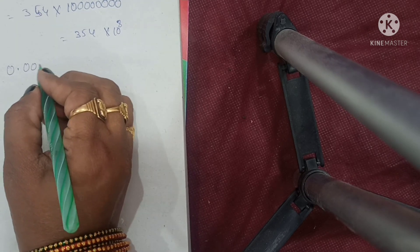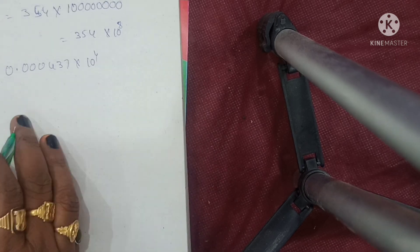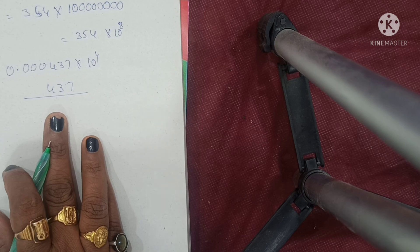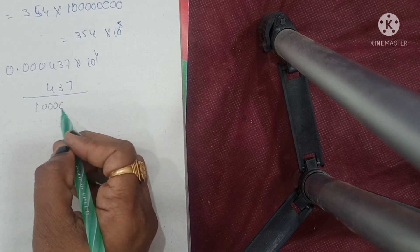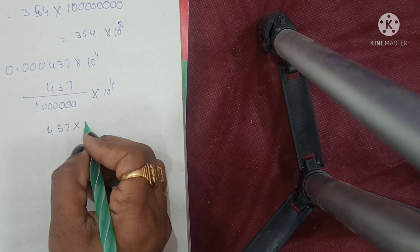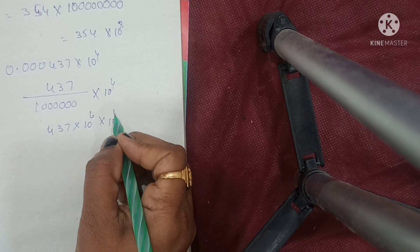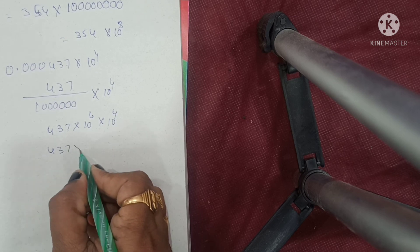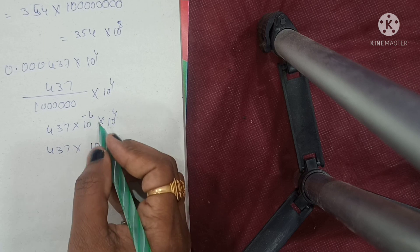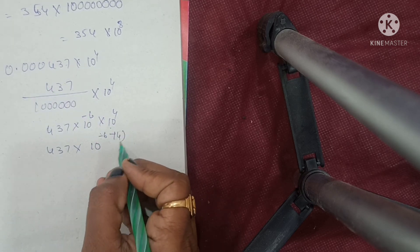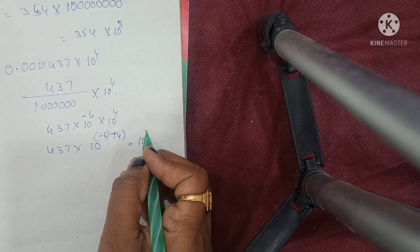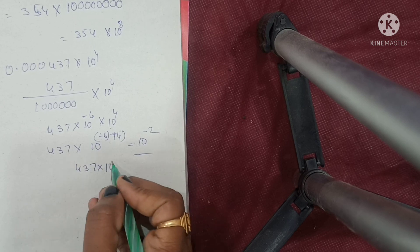Last one: 0.000437 into 10 to the power of 4. After the decimal point: 1, 2, 3 — so 4.37 into 10 to the power of minus 3. But it is already multiplied by 10 to the power of 4. Since the bases are equal, add the powers: minus 3 plus 4 equals 1. So the answer is 4.37 into 10 to the power of minus 2.